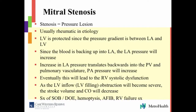Since the left atrium is somewhat of a weaker structure, usually there is blood backing up into the left atrium, and the left atrial pressure is going to go up. Since the left atrium doesn't have a lot of muscle, all of this is going to translate back into the pulmonary vasculature — pulmonary veins, pulmonary vasculature — and pulmonary arterial pressure will go up, eventually leading to right ventricular systolic dysfunction.